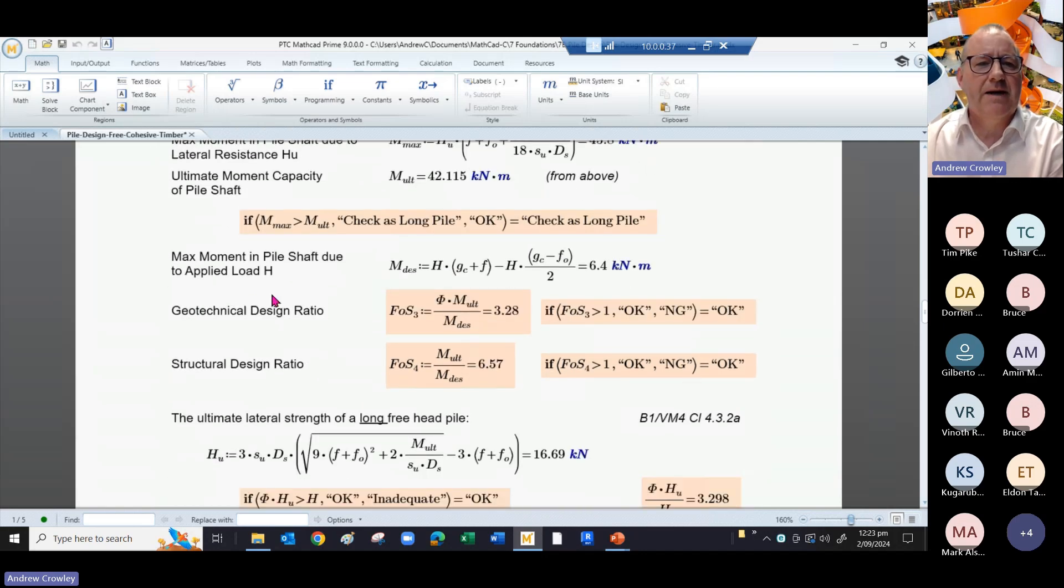You can derive the applied moment in the pile shaft due to the applied load H, which gives you 6.4 kilonewton meters, which gives you a geotechnical design ratio of 3.2, which seems okay as a long pile.